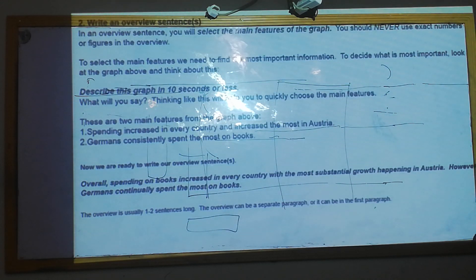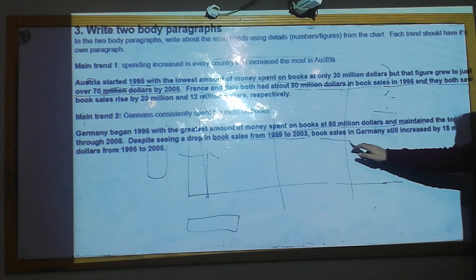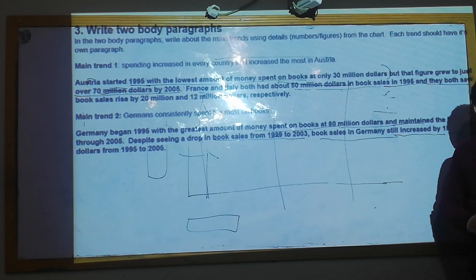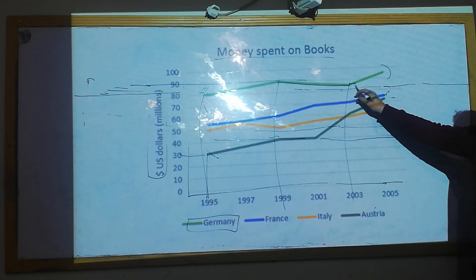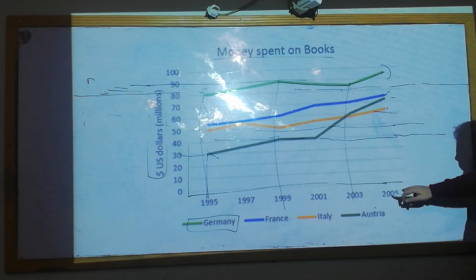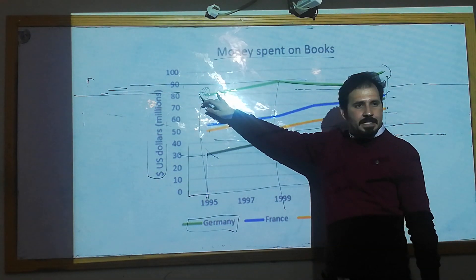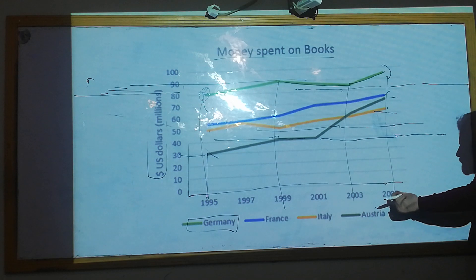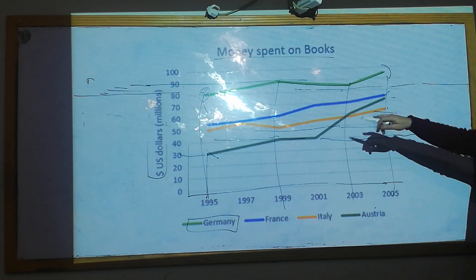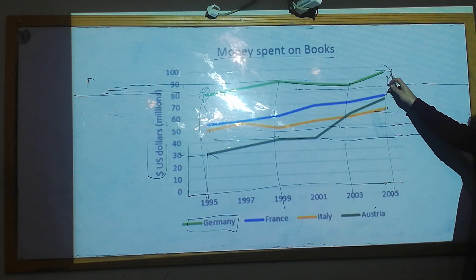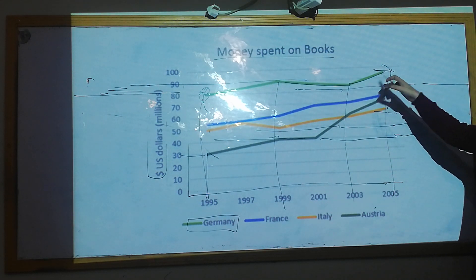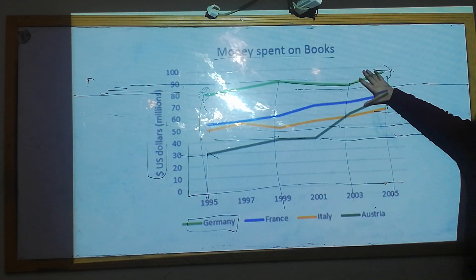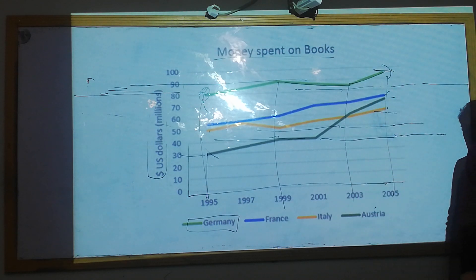After the drop, book sales in Germany still increased by 15 million dollars from 1995 to 2005. They started with 80 million and reached almost 95 million — showing an increase of 15 million over the full period. This is how we can put together the second supporting overview paragraph with all the key explanations.